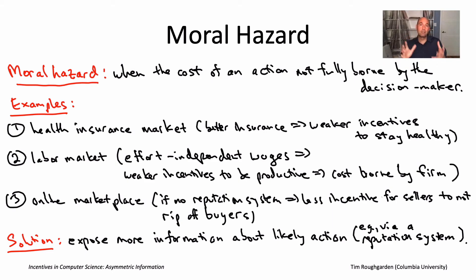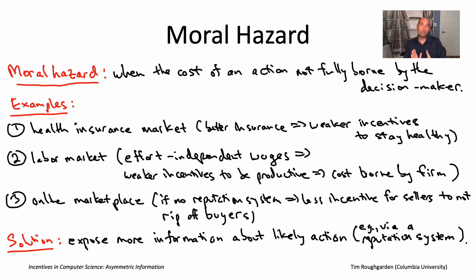This ties together the topics of this module — asymmetric information, adverse selection, and moral hazard — with our overarching narrative of understanding the role that incentives play in the platforms we use every day. We've seen that adverse selection and moral hazard are both common in markets, including online marketplaces. The primary role of a reputation system in one of these platforms is to mitigate one or both of these: to expose more information about quality to mitigate adverse selection, and to expose more information about the actions that participants are likely to take, thereby reducing the moral hazard problem by introducing a lever for karmic retribution — very much in the spirit of our repeated prisoner's dilemma discussion in module two.